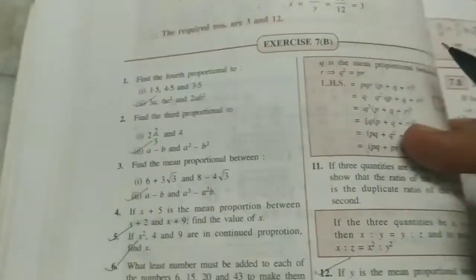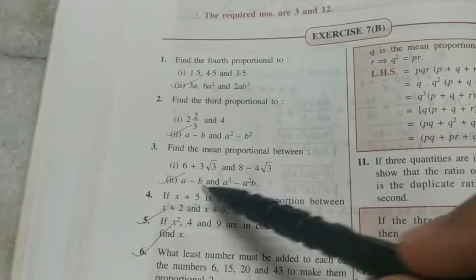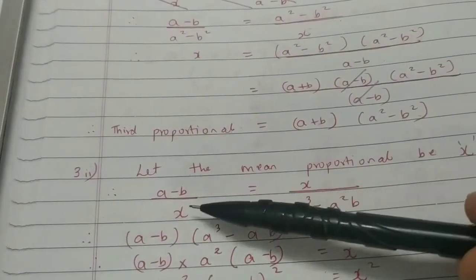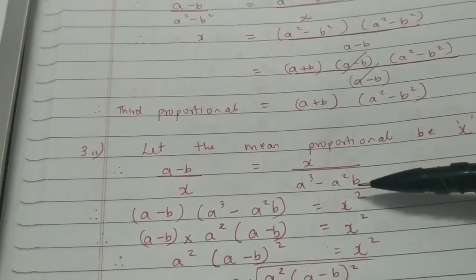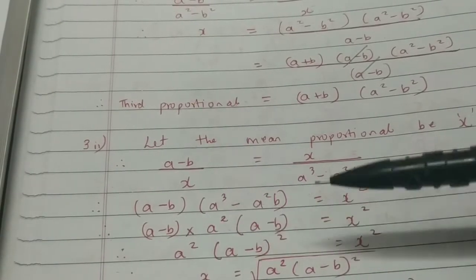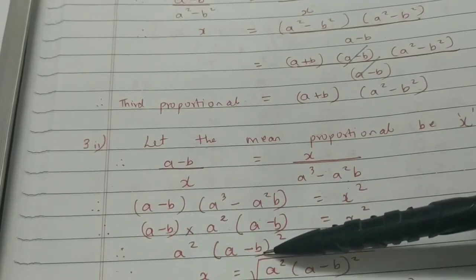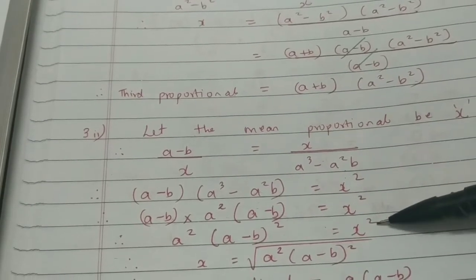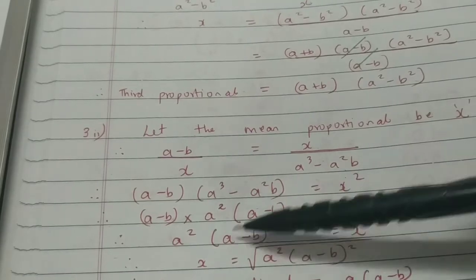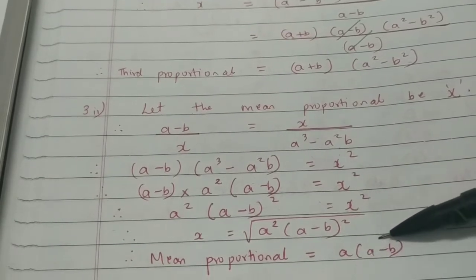Next question, 3.2: Find the mean proportional, that is the middle term. Two numbers are given but we have to find the middle term, which we'll assume to be X. The ratio becomes first term upon mean term is equal to mean term upon the last term. If you cross multiply you get this. Here we can remove A squared common — so A minus B bracket also appears twice and will be written as a square. So the whole thing is a perfect square. Now the X squared can be shifted and we write the square root of this. The squares disappear and this is the final answer — that's the mean proportional.